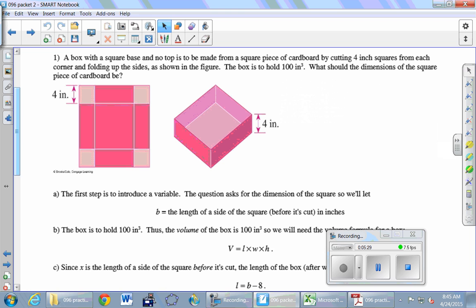Okay. So here's the problem in number one. It says you have a box. Let's go back here. So we're going to make a box with a square base and no top. That's the right-hand picture. By taking a square piece of cardboard, that's the left-hand picture, and cutting out four-inch squares from each of the corners. So start with a piece of cardboard. Cut out a square from each of the corners, and fold up the sides, and that's going to make us a box.